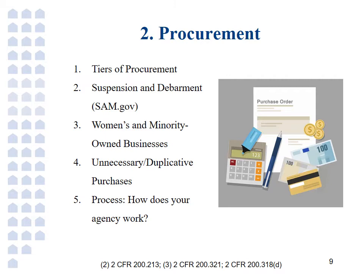Number two, federal regulations forbid entering into business with entities that are suspended or debarred from doing business with the federal government. If you're not sure whether an entity might be suspended or debarred, you can look them up in SAM.gov — that's S-A-M dot gov. Strategies requires all subrecipients to sign a debarment certificate stating that they are not currently suspended or debarred from doing business with the federal government. Number three, 2 CFR 200.321 requires that agencies must take all necessary affirmative steps to assure that minority businesses, women's business enterprises, and labor surplus area firms are used when possible. You will need to show some way in which you are meeting this requirement, so it is recommended that these be written into your policies and procedures.